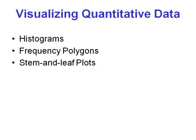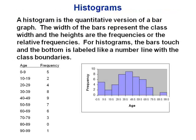With quantitative data, since we're dealing with numbers, the options are a little different. There's still a bar graph option, which is called a histogram, but because we've got numerical values, we also have a couple of other options. A histogram is similar to a bar graph but a little different — one key difference is that the bars usually touch with a histogram, whereas with qualitative bar graphs there's some space in between.